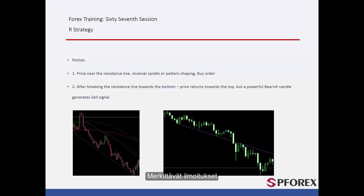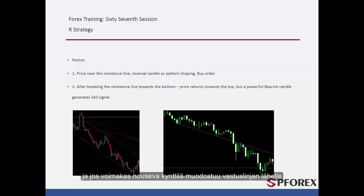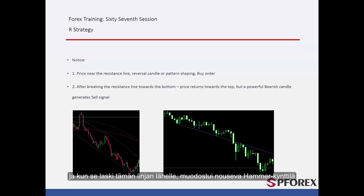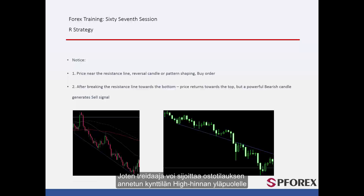Significant Notifications: When price declines towards the resistance line without crossing anything, if a powerful bullish candle forms near the resistance line, then a powerful and reliable buy signal is generated after price goes higher than that bullish candle. On the left graph, price could not cross the resistance line for a long time, and after it fell near this line, a bullish hammer candle formed. Thus, a trader could place a buy order above the high price of the given candle.